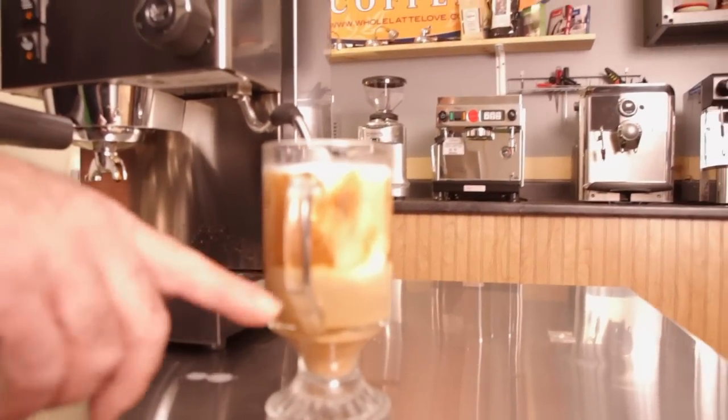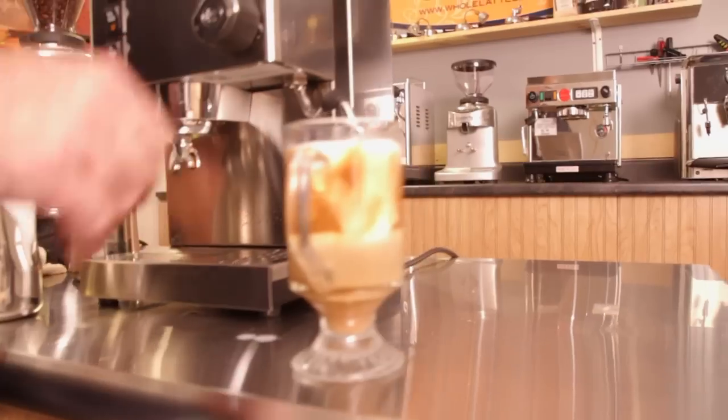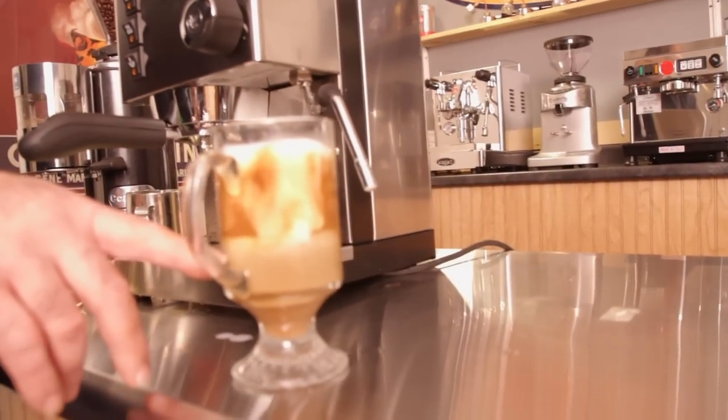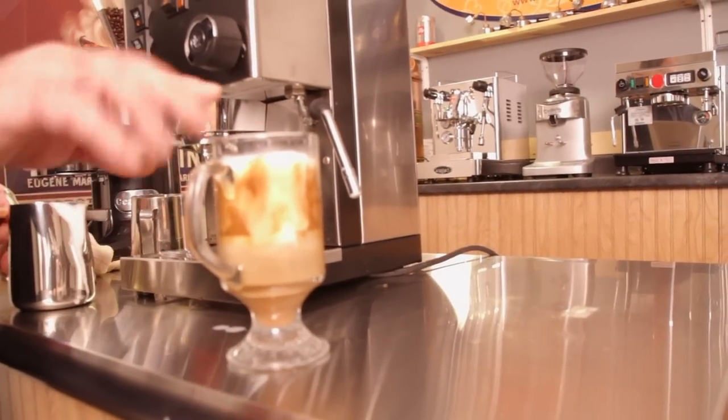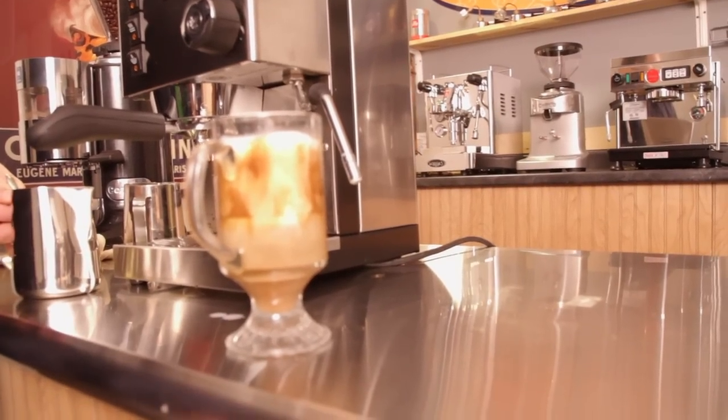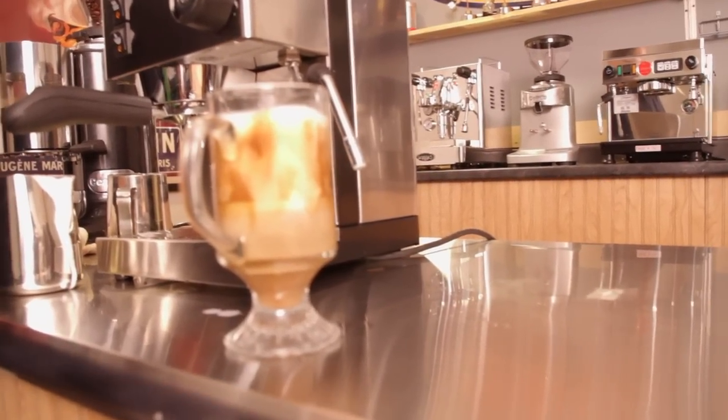And you can see by the layers, remember in our latte, it was all steamed milk, a little bit of foam on top. Here we've got espresso, then we've got our steamed milk, and we've got our foam milk on top. So we've created a beautiful cappuccino using the Rancilio Silvia.